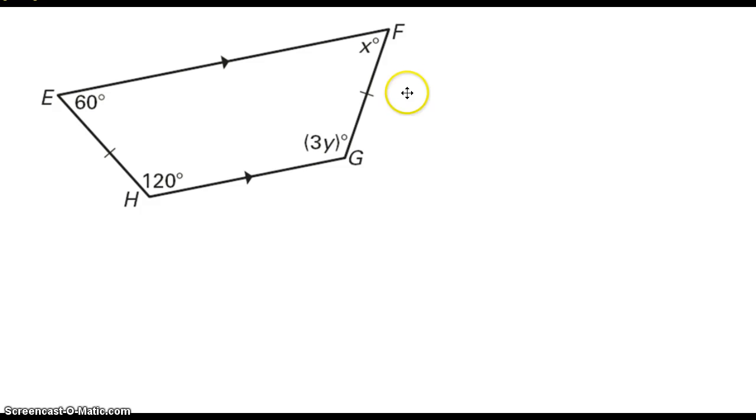In an isosceles trapezoid, the base angles are congruent. So I'm going to set 120 equal to 3y. I'm going to divide, and y is 40 degrees. X is 60 degrees, so I don't have to do any math. X is 60.